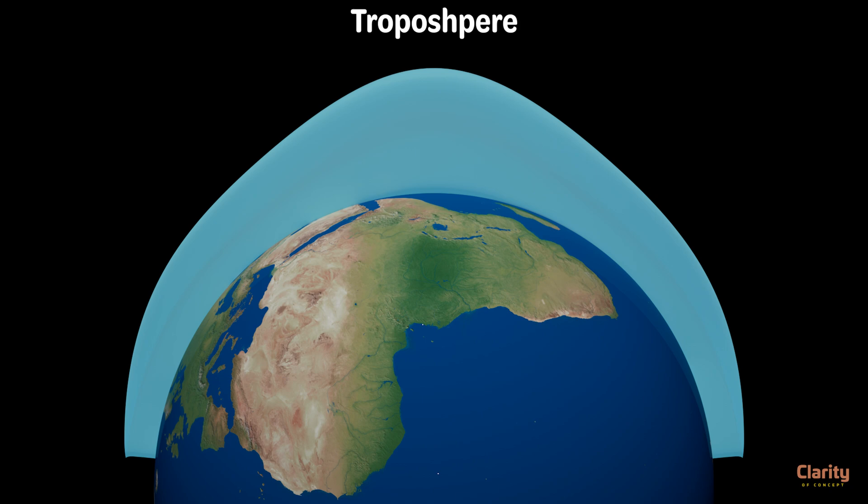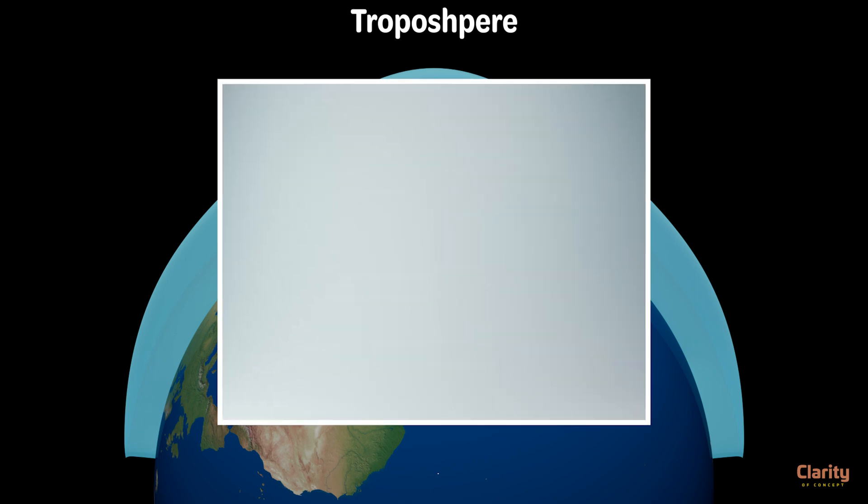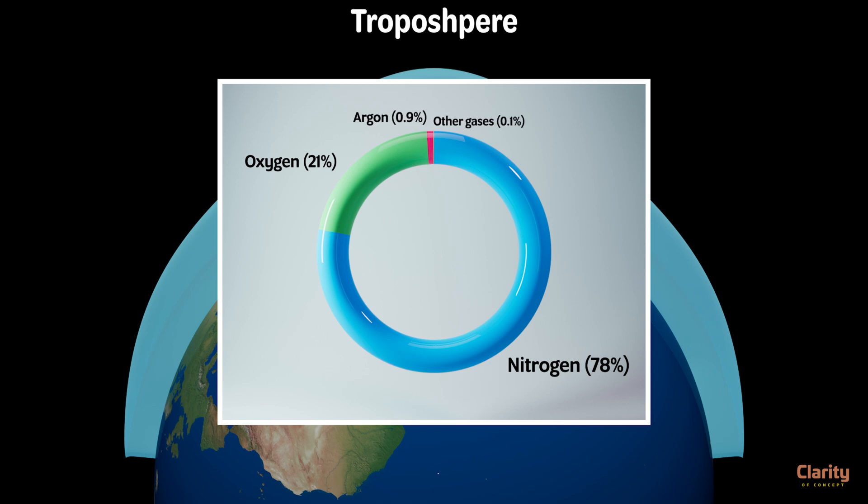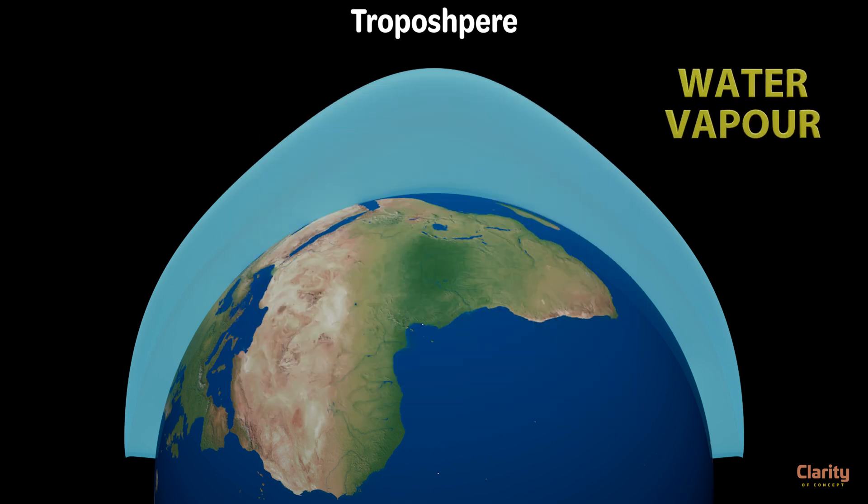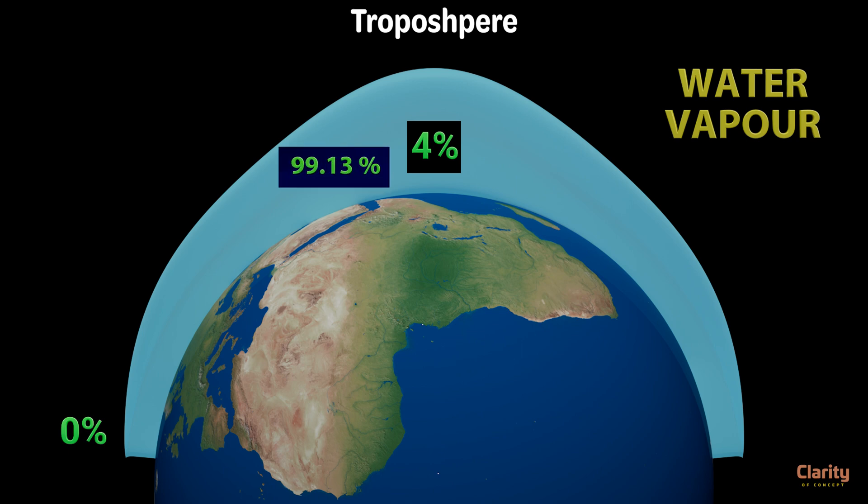Around 80% of total mass of Earth's atmosphere is in troposphere itself. 50% of total atmospheric mass is found within first 5.5 km. Troposphere has a mix of different gases such as nitrogen, oxygen, argon, carbon dioxide and small amounts of other gases. Apart from these, it also contains water vapour that varies across regions. Near equator, water vapour is as much as 4% of total volume and near polar regions it is nearly zero. Troposphere has 99.13% of total water vapour in the atmosphere.